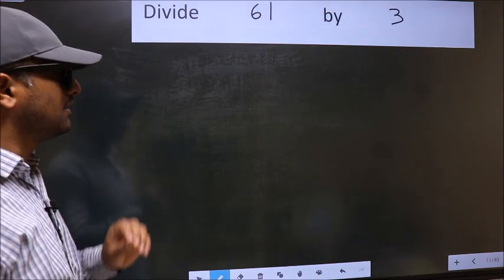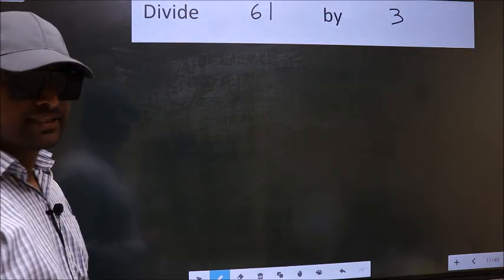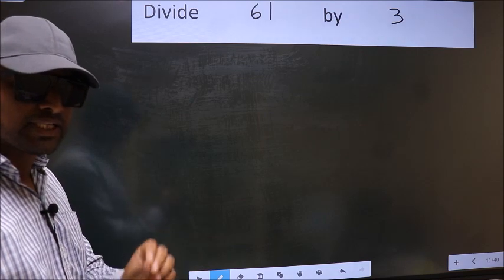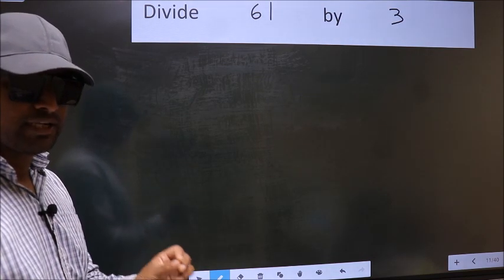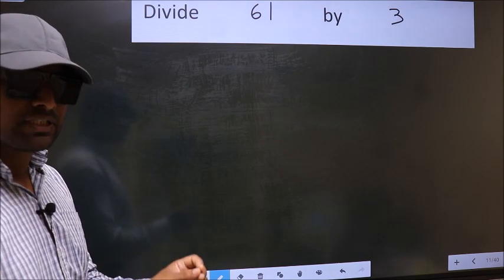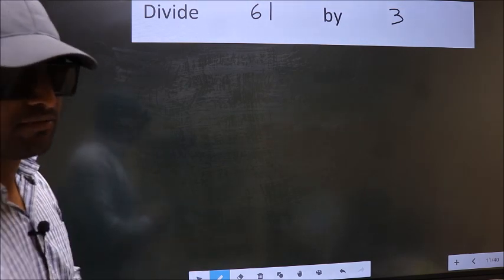Divide 61 by 3. While doing this division, many make a mistake. What is the mistake that they do? I will let you know. But before that, we should frame it in this way.